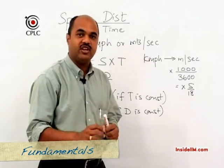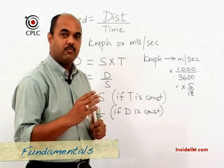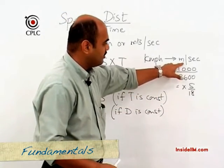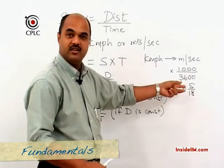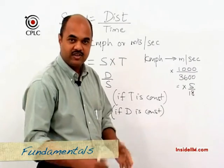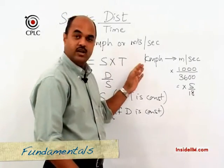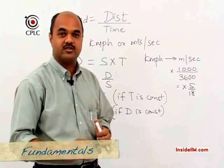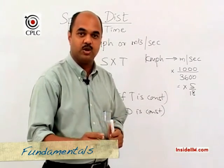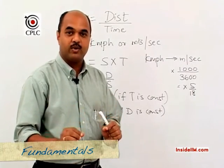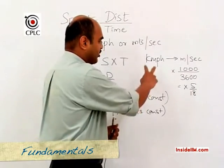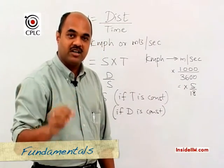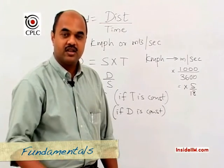For example, 54 kilometers per hour multiplied by 5/18 gives 15 meters per second. To convert from meters per second back to kilometers per hour, multiply by the reciprocal: 18 upon 5. Additionally, when speed is given in miles per hour, use the conversion 1 mile equals 1.6 kilometers — so multiply miles per hour by 1.6 to get kilometers per hour.